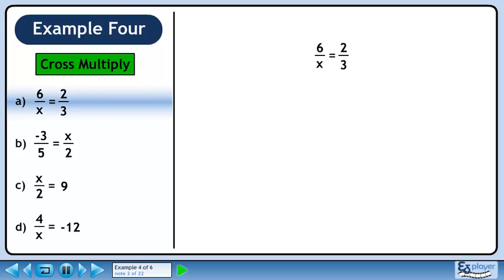In part a, we have the equation 6 over x equals 2 over 3. Multiply diagonally across the equals to get 18 and write it down. Now multiply diagonally the other way to get 2x. Write this down too, separating it from the first term with an equals.